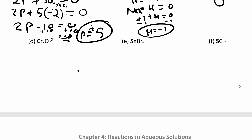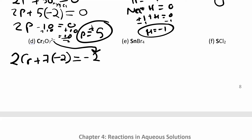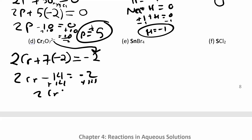For Cr2O7²⁻: seven oxygens, each at negative two. This all has to equal negative two because that's the charge on the polyatomic ion — don't set it to zero. So 2Cr + 7(−2) = −2, giving 2Cr − 14 = −2. Add 14 to both sides: 2Cr = 12, so chromium equals plus six.